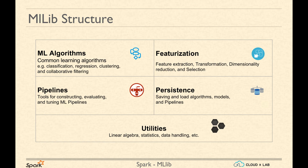The third package is pipelines, which has tools for constructing, evaluating, and tuning machine learning pipelines. As part of persistence, it provides the ability to save and load algorithms, models, and pipelines. The saved models and pipelines can be transmitted over the wire or saved to disk for running in production. The rest of the utilities it provides are related to linear algebra, statistics, data handling, etc.